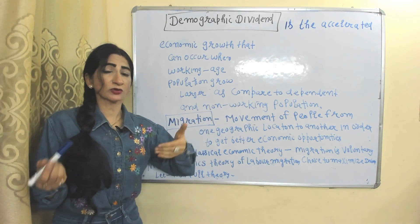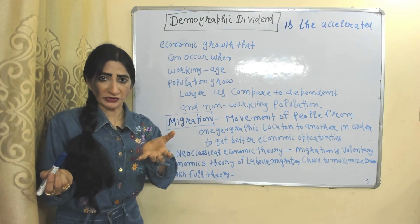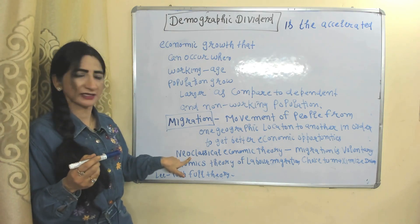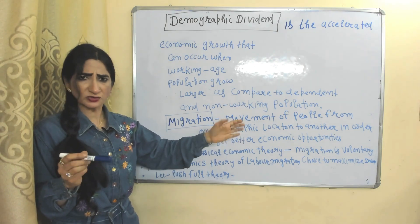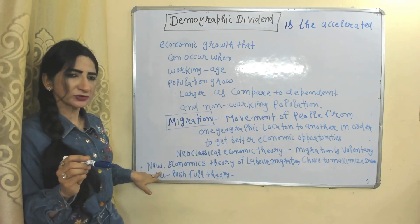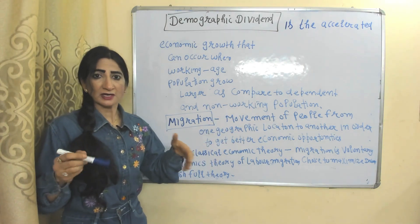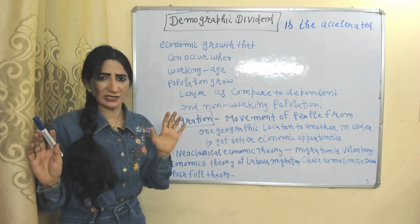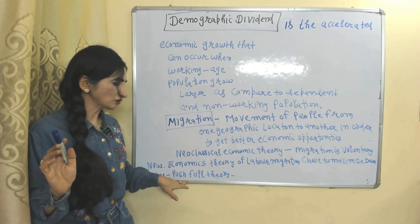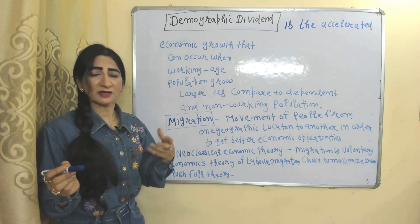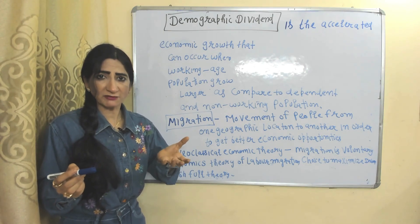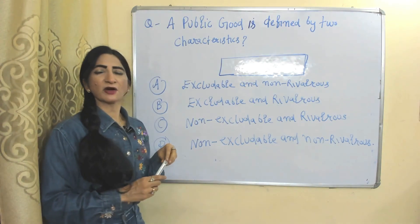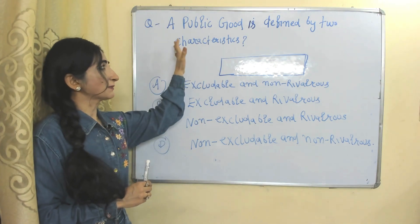Migration means the movement of people from one geographic location to another in order to receive better economic opportunity. There are mainly three theories of migration: according to the neoclassical economic theory, migration is the voluntary choice of an individual. According to the new economic theory of labor migration, decisions are taken in a group, not by an individual in isolation. According to Lee's push-pull theory of migration, some push factors — meaning negative factors — force people to migrate to other locations.